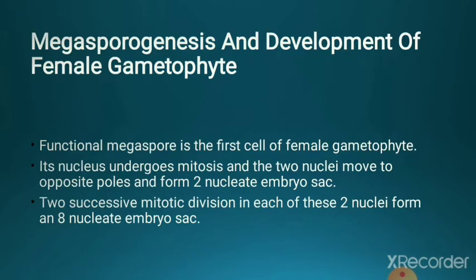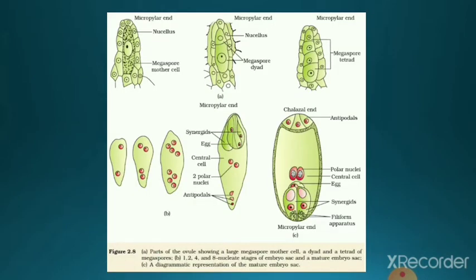The functional megaspore is the first cell of the female gametophyte. Its nucleus undergoes mitotic division to form two nuclei which move to opposite polar ends, then each divides into two, and then again into four, so four nuclei are present at each polar end. Then two polar nuclei from each end move to the center to form the polar nuclei. Three cells remain at the chalazal end forming antipodal cells, and at the micropylar end two synergids and one egg cell are developed.